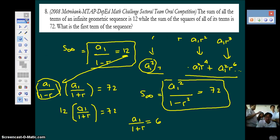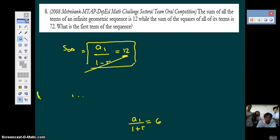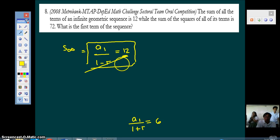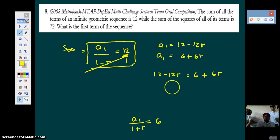So that means a1 over 1 plus r equal to 6. Now you work with these two. You will have your a1 is equal to 12 minus 12r. What happened there? Just multiply. Do the same here. What is a1? 6 plus 6r. Therefore, 12 minus 12r is equal to 6 plus 6r. So 18r is equal to 6, so r is 6 over 18 or 1 third.